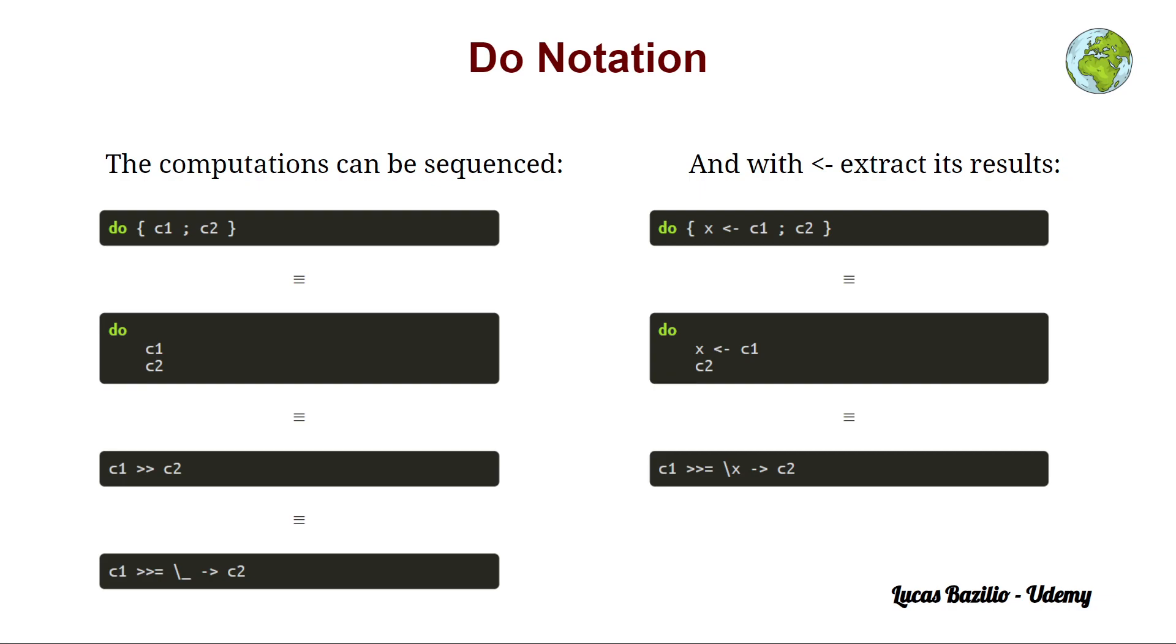So, the idea of the Do Notation is that we can sequence operations. When we write Do and between braces C1 semicolon C2, it means that we will first do C1 and then we will do C2. Now keep in mind that this concept to sequence a series of computations or operations is a concept that is out of the functional programming world, since in functional programming we do not know when the operations are performed.